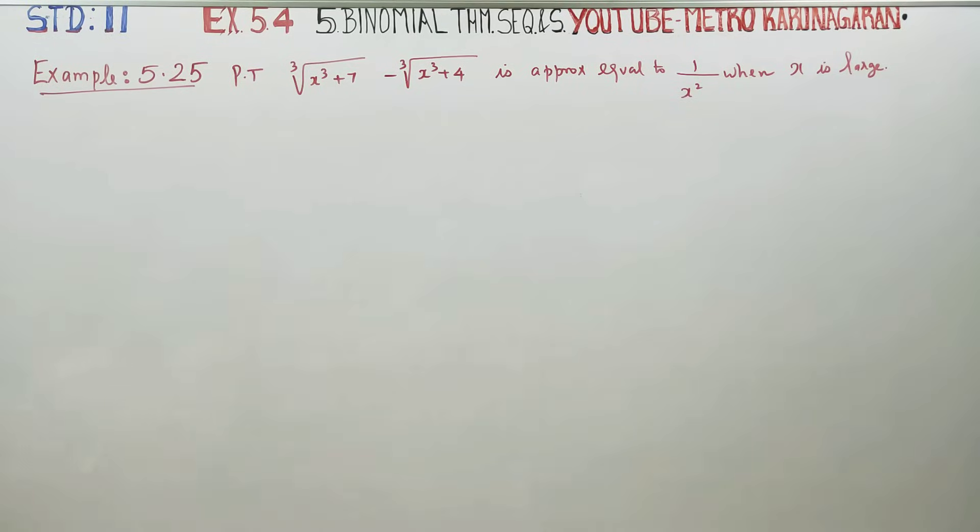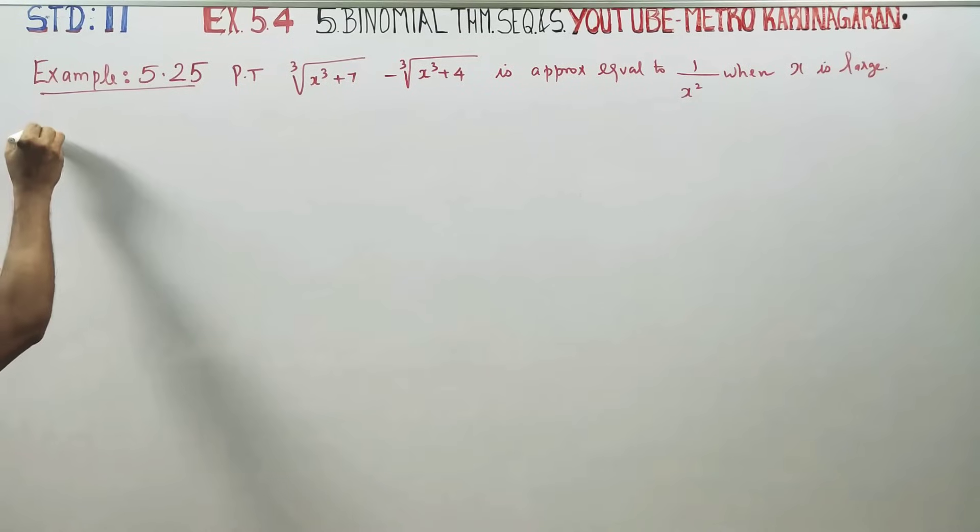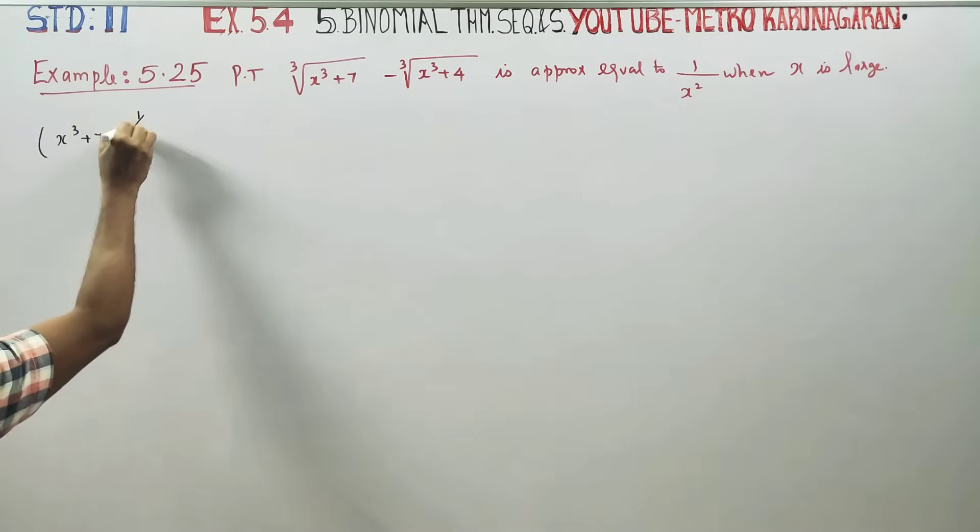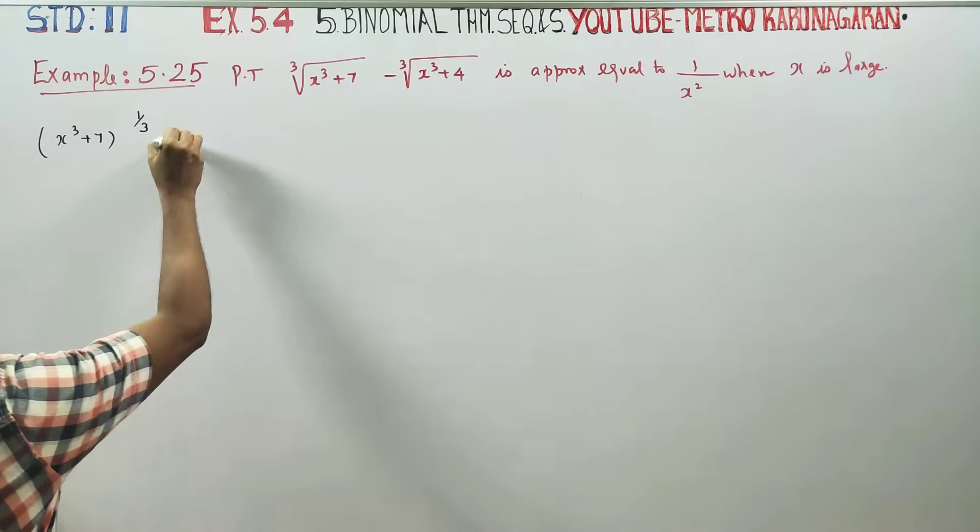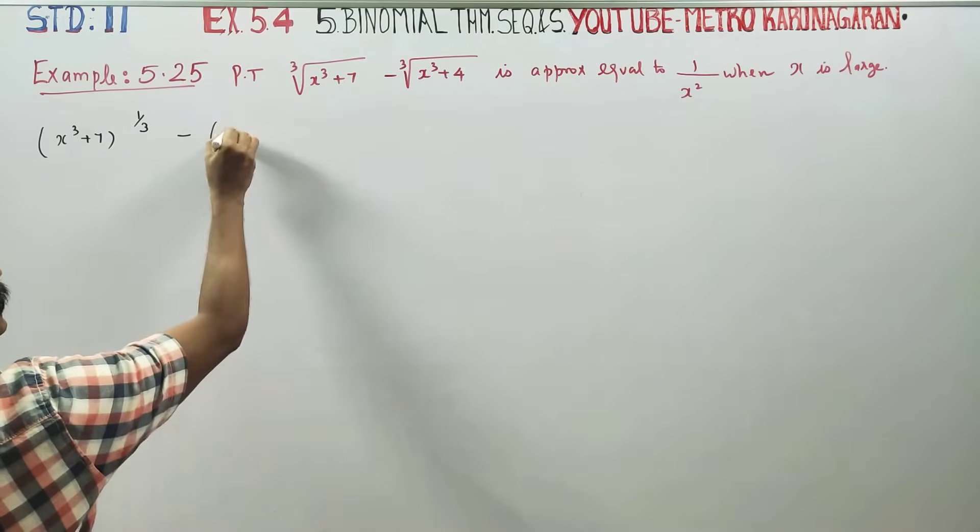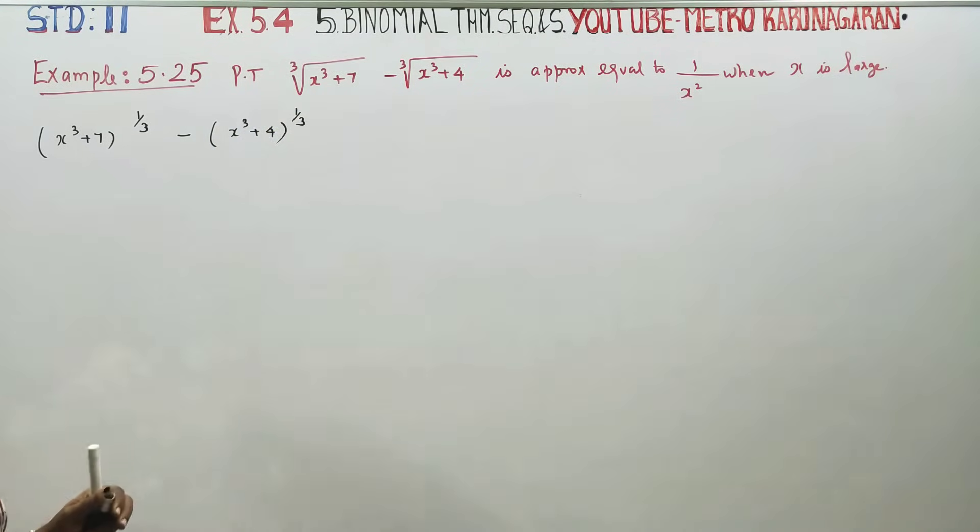A very important 5 mark sum. First stage: (x³ + 7)^(1/3) minus (x³ + 4)^(1/3).